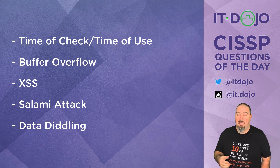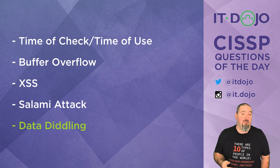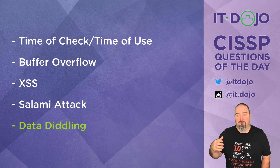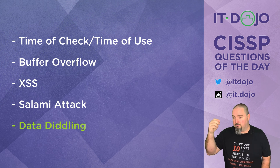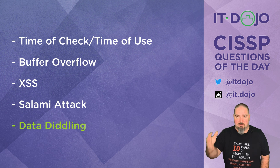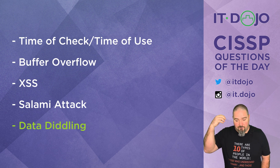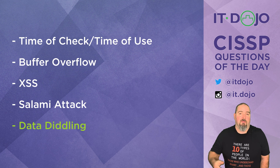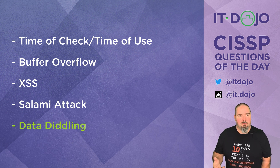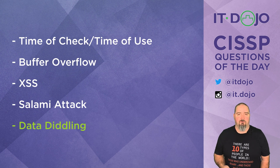That leaves the last answer choice: data diddling — and the question is really the textbook definition of data diddling. Data diddling is the idea that you go in, change a value, a process reads and uses it as in our question, and then afterwards you change the data back to the original value. Nobody really says 'data diddling' in a meeting, but that is the textbook definition of what it's all about.